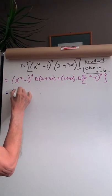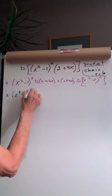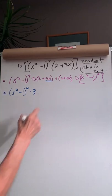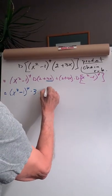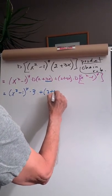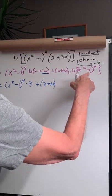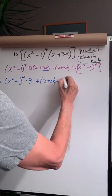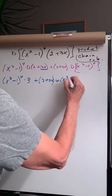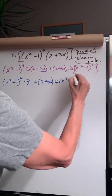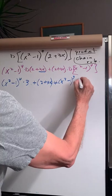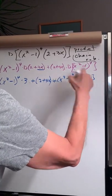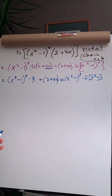Leave this alone. So the derivative of this is 3, so this times 3, plus 2 plus 3x. And the derivative of this, which is 4, this is the sign, x squared minus 1 cubed times the derivative of x squared minus 1, which is inside.